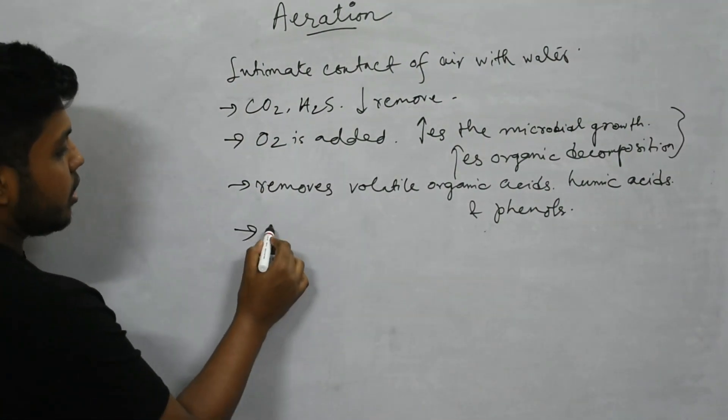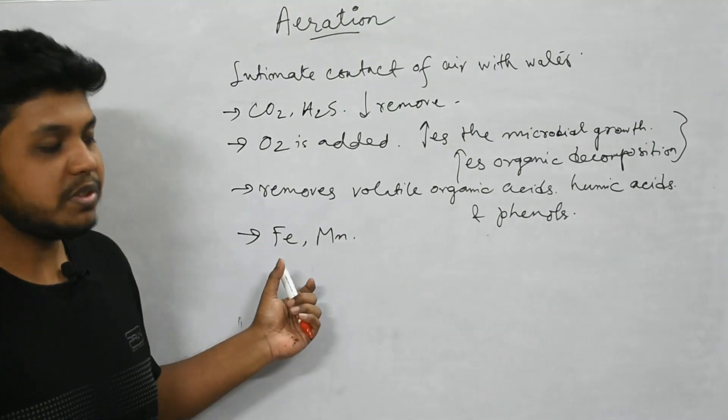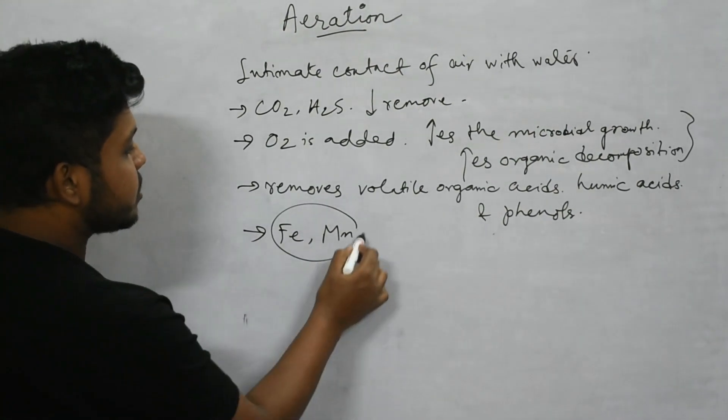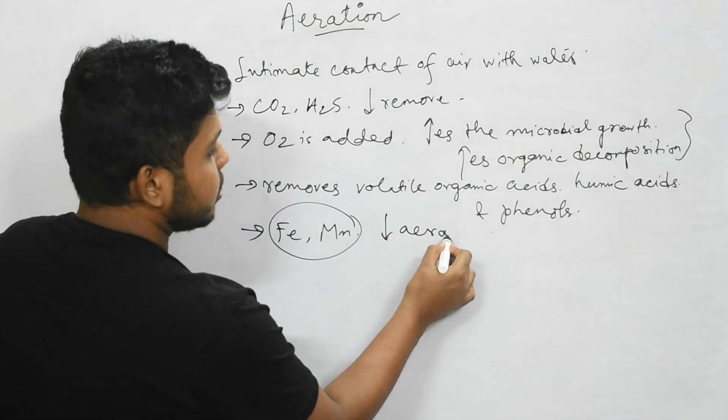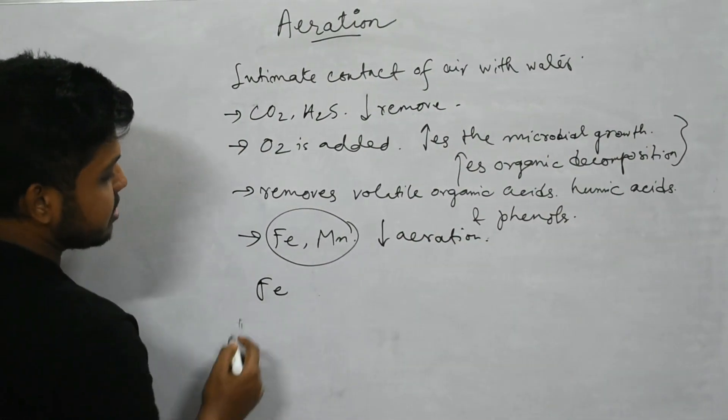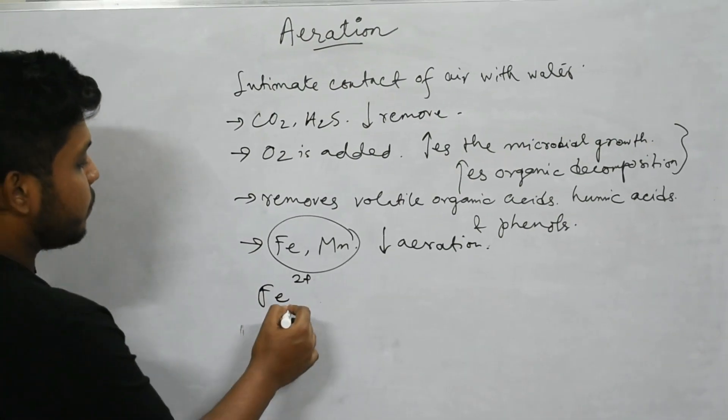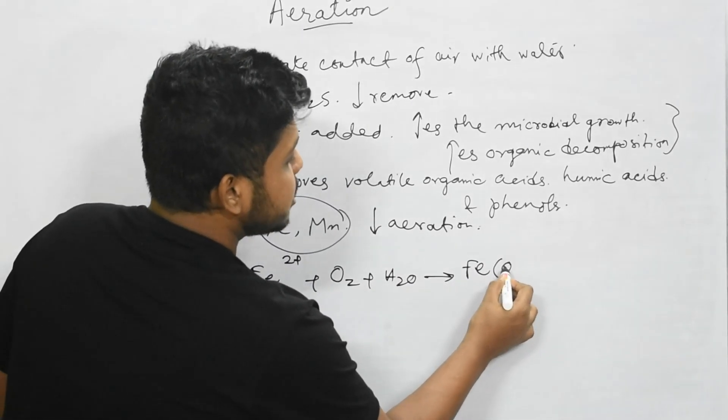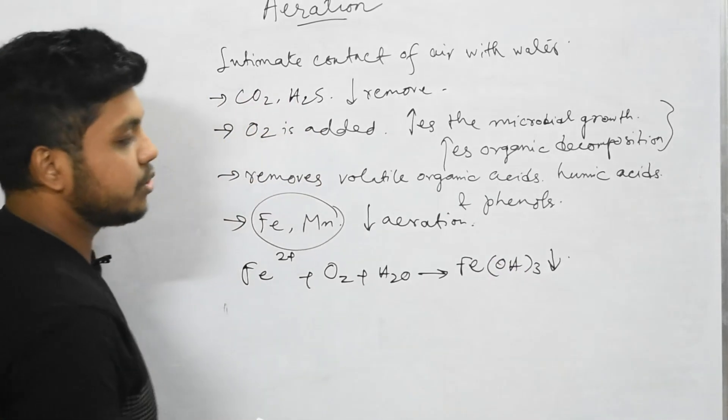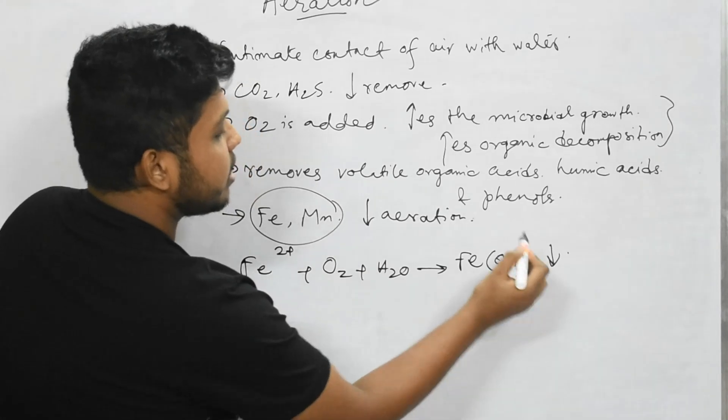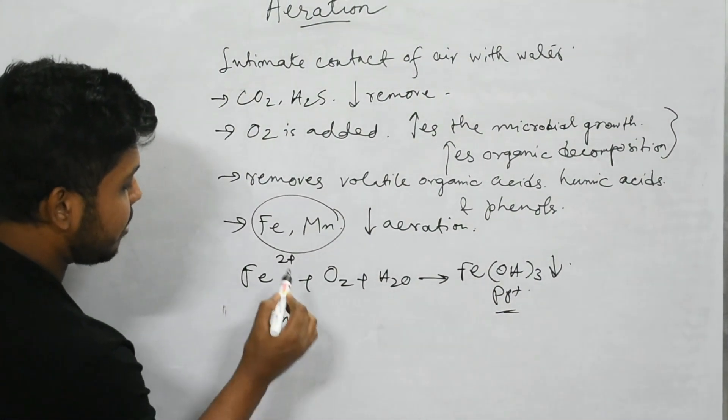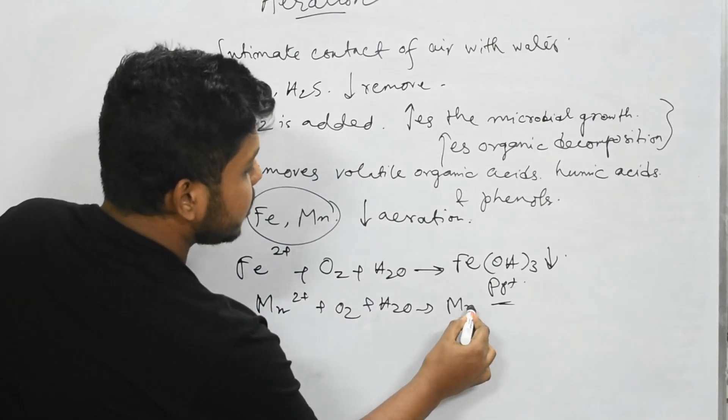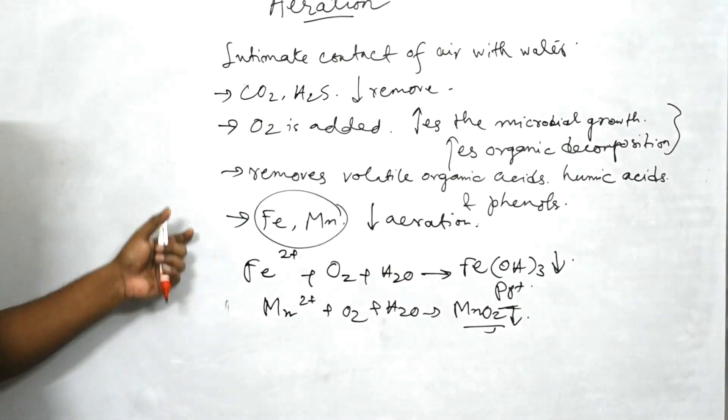Iron and manganese, the presence of these minerals is frequent in groundwater. Removal of these two minerals is possible by aeration. Fe is present in Fe2+ form which is a dissolved form which in contact of oxygen and water gets precipitated as Fe(OH)3. This precipitation gets removed as sludge. Again, Mn2+ in presence of oxygen and water precipitates as manganese dioxide. In this process the water can be purified through this aeration process.